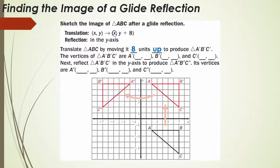We can see the pre-image — we know it's the pre-image because it doesn't have a prime. Nothing's happening with the X value, but the Y value moves up by 8. A' is located at X equals 2 and Y equals 6. B' is at 7 and 6. C' is located at 7 and 2.